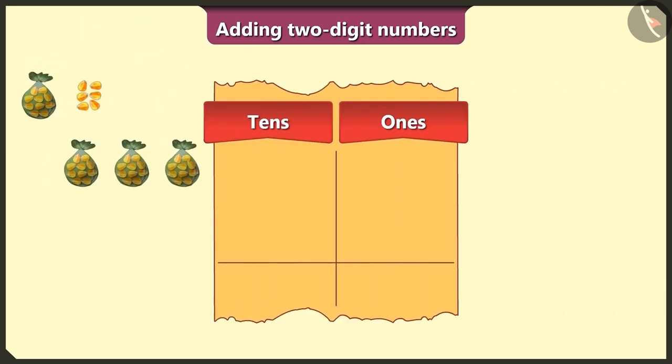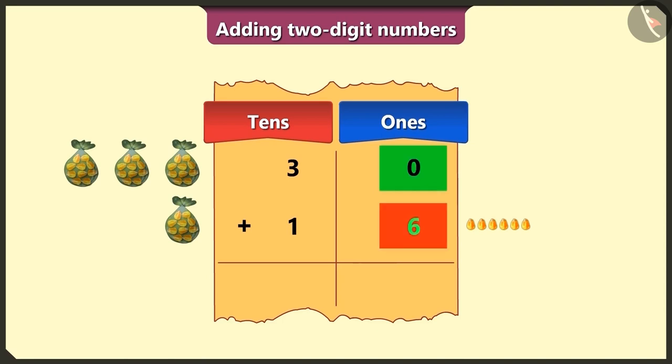To write number 30, we will write 3 in tens box and 0 in the ones box. To add 16 to 30, write 1 in the tens box and 6 in the ones box. Now first in the ones box, we will add the numbers 0 and 6, that will give us 6.